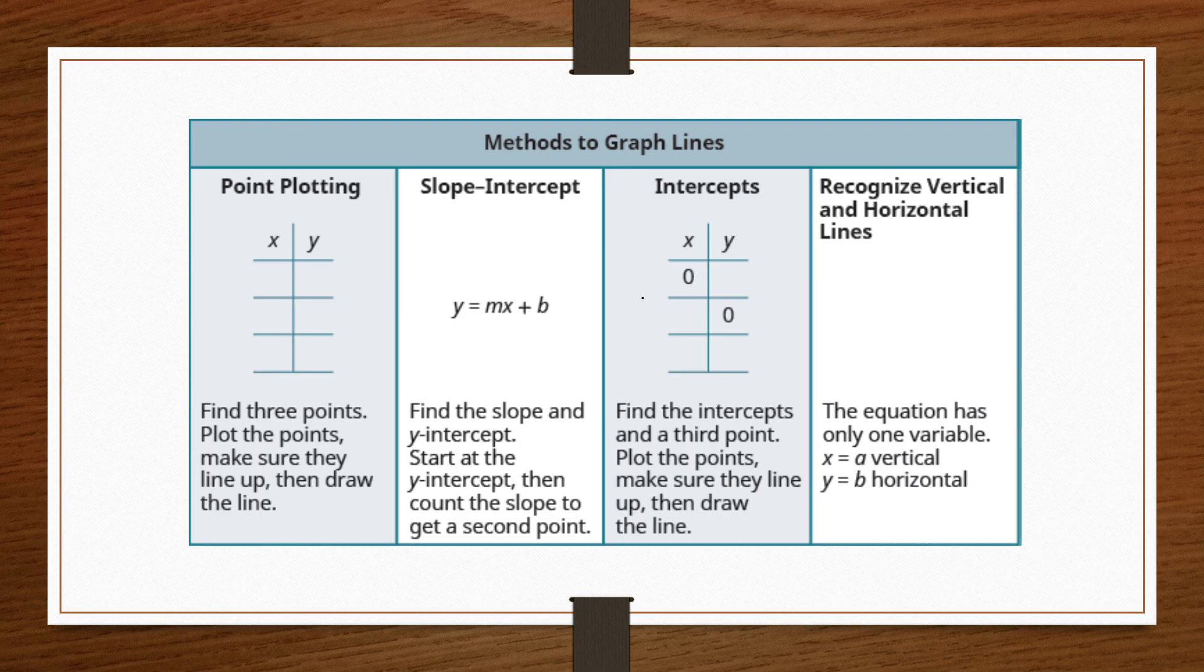We may on occasion actually have to find a third point because there are equations at which the X and Y intercepts are actually at the same place. Now if the X and Y intercepts are unique meaning they're in different locations that's really all we need to draw our straight line.